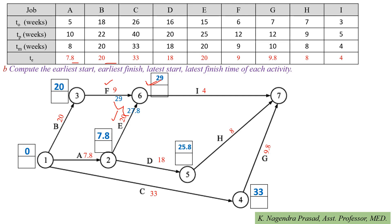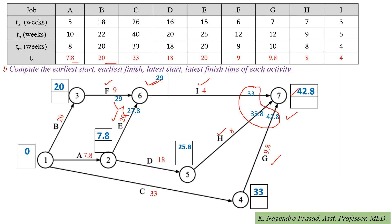For activity G, start time = 33 and finish time = 33 + 9.8 = 42.8. For activity H, start time = 25.8 and finish time = 33.8. For activity I, start time = 29 and finish time = 29 + 4 = 33. Observe that event 7 is a merge event for activities I, H, and G. Among all finish times, we consider the maximum, which is 42.8. So the finish time at event 7 is 42.8.